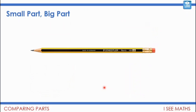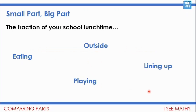Let's think about this pencil — not only the parts of a pencil, but which ones are small parts and which are the bigger parts. The rubber is quite a small part, just this little end bit. But a large part of a pencil is the wood — probably more than half of it. Now have a think about these examples: the fraction of your school lunchtime that you spend eating, outside, playing, or lining up. Which are the smaller parts and which are the larger parts? Pause the video and have a think.